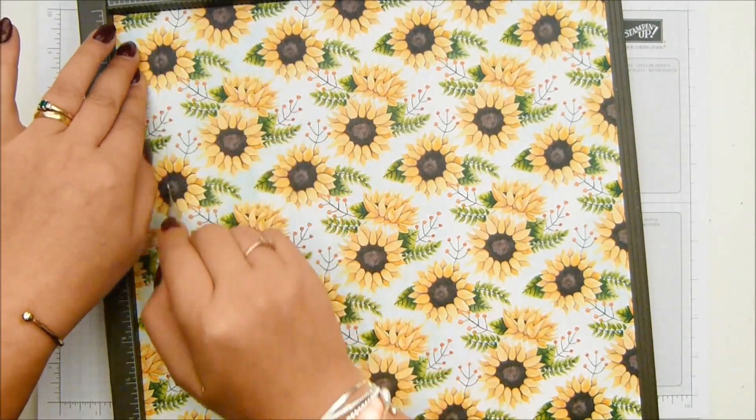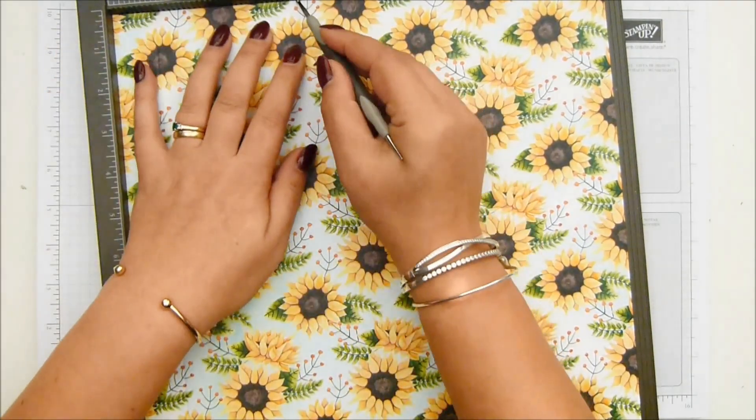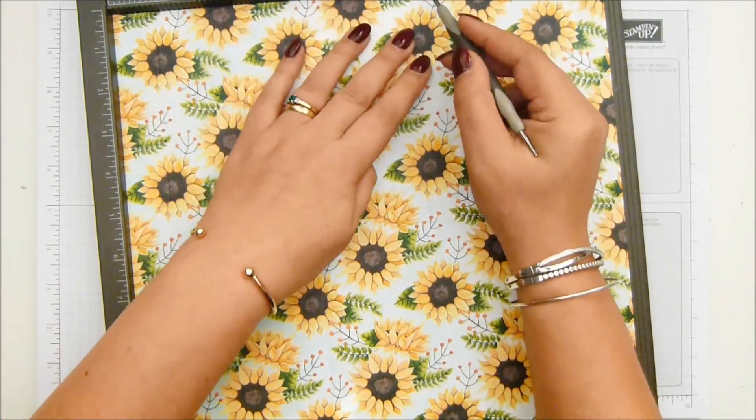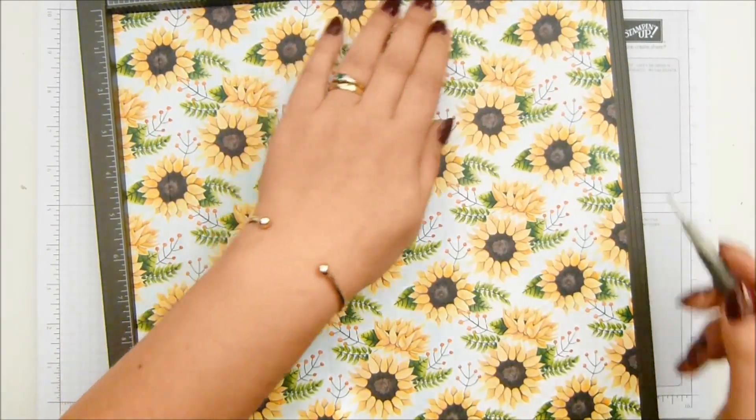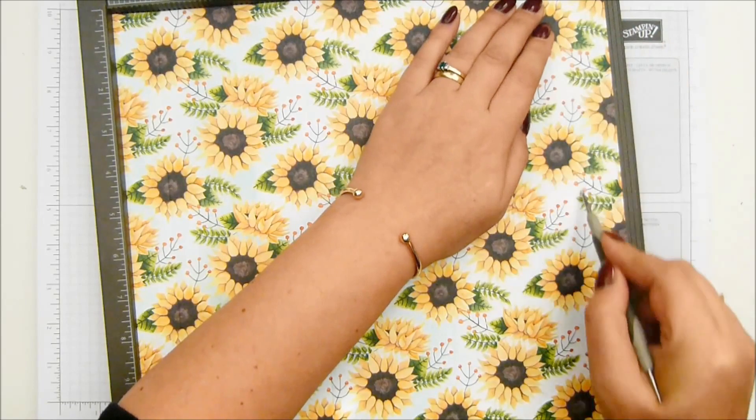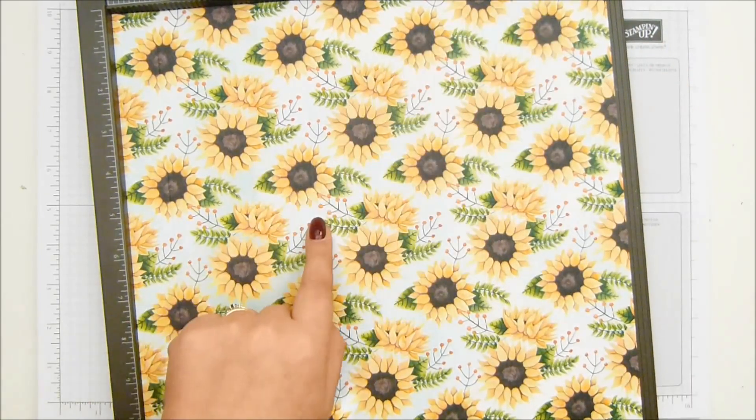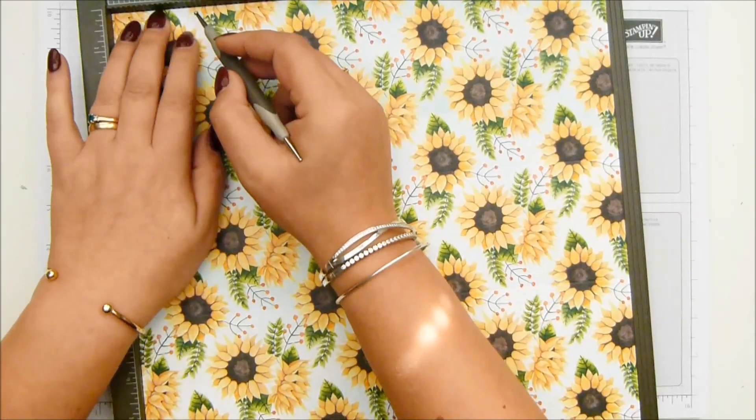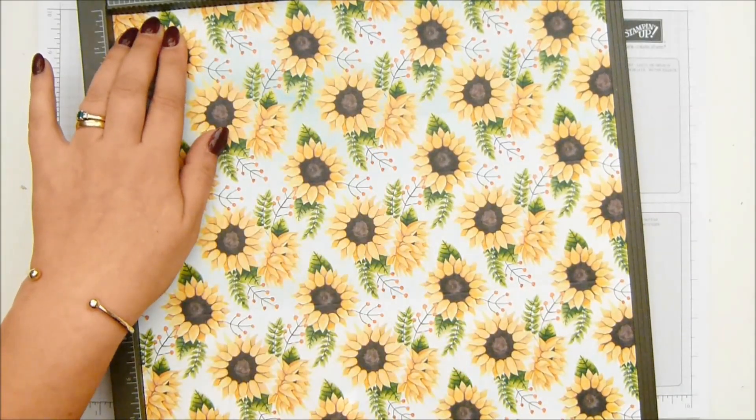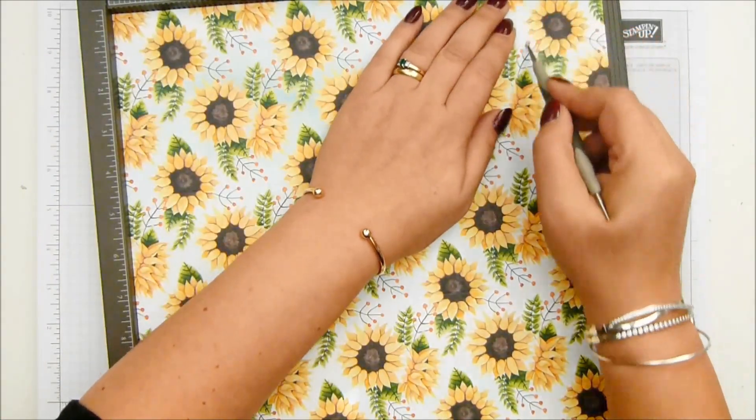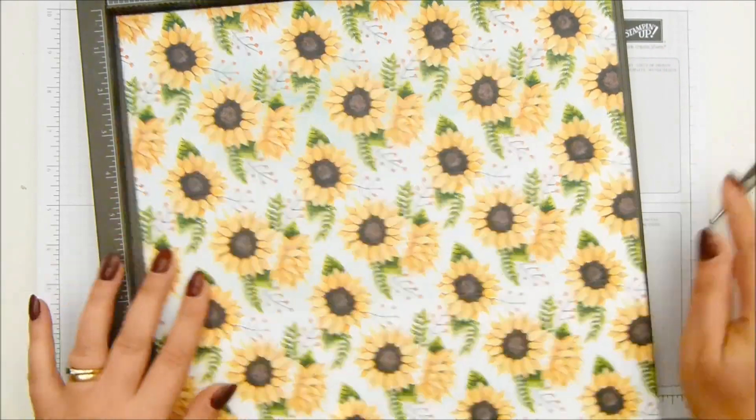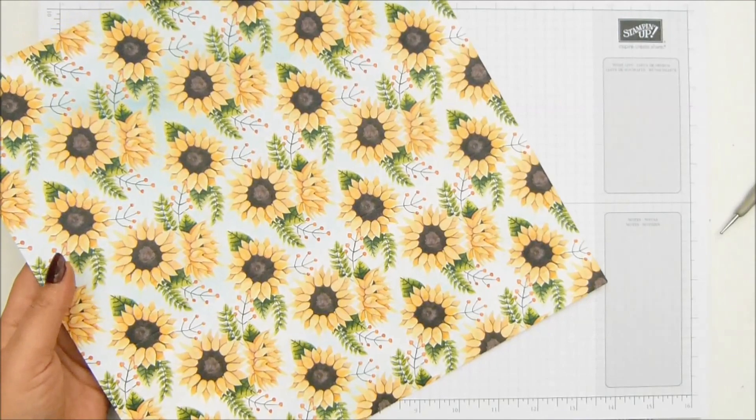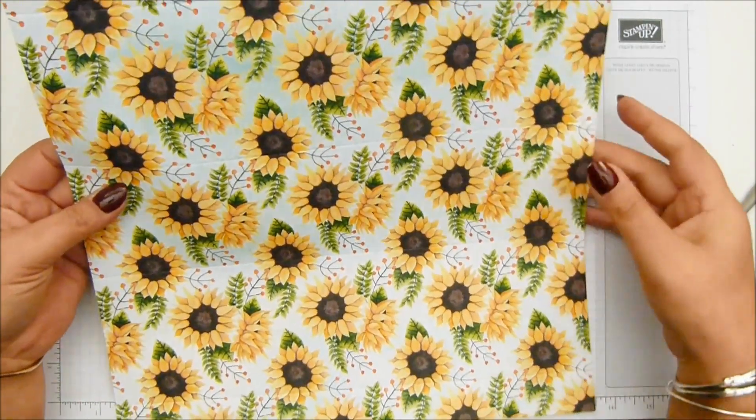Score it on the first side at one inch, four and a half, seven and a half and 11 inches, which in metric is two and a half, 11, 19 and 27 and a half. Whiz it round and score it at two inches and 10 inches, which is five and 25 centimeters. I'll have everything written down on my blog. So if you click open the description bar, you'll see it there.